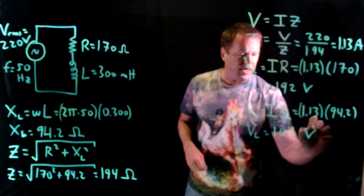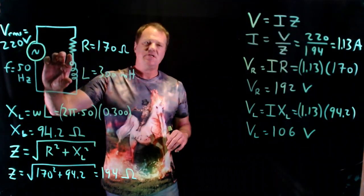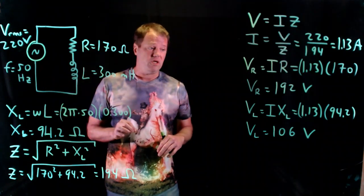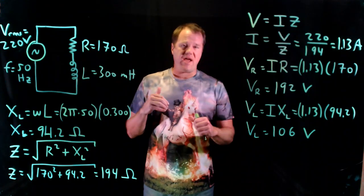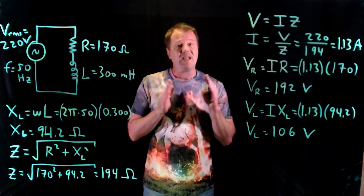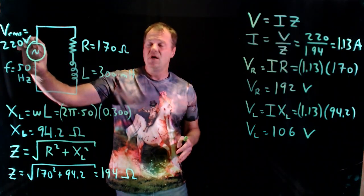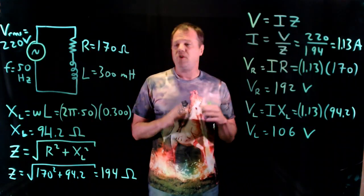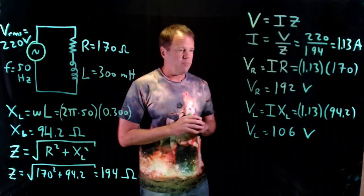Now this might seem kind of weird at first glance, because I've got 192 volts across this resistor, I've got 106, that doesn't add up to 220, which is what we'd expect if this is a purely resistive circuit. So the explanation here is that these voltages are out of phase. The voltage across the resistor and the voltage across the inductor are peaking at different moments in time. So the instantaneous voltages of each of these has to add up to the instantaneous voltage of the power supply, thus satisfying Kirchhoff's voltage law. But the RMS voltages or the maximum voltages don't have to add up. So don't let that bother you too much.